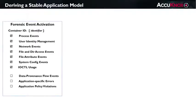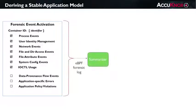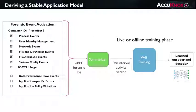To learn the application's behavior, we'll train the VAE using eBPF forensic data collected during controlled runs, or runs scrutinized to ensure that they represent normal operating patterns. These raw forensics aren't fed directly to the neural net, but rather are put through a preprocessor or summarizer, which calculates various syscall statistics during each runtime segment, say every 30 seconds, and then feeds these vectors to the VAE training process.